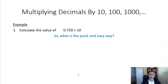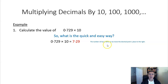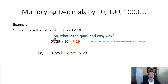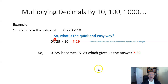We're going to have a look at how we can do it as a quicker way, without having to do all that working out. If we look at our question and our answer, you'll notice that we've got 729 in both. What you'll notice is that the decimal point has moved from its original position over to between the 7 and the 2. The number 10 has one zero, so that means we move the decimal point one place to the right — from its original position, one place to the right, now between the 7 and the 2. We don't normally write the leading zero, so we just get 7.29. That's the quicker way.